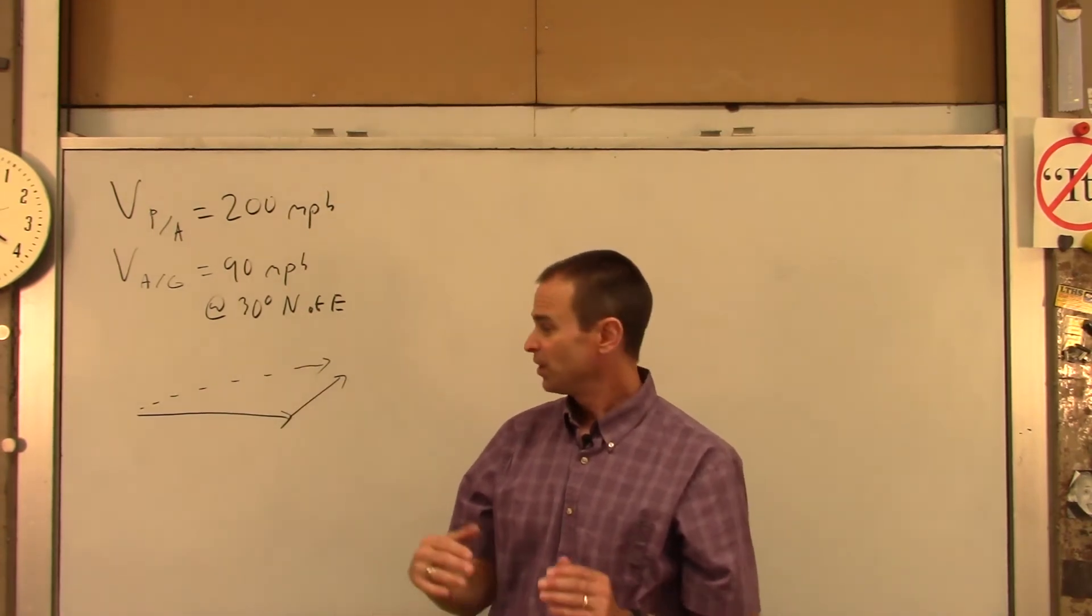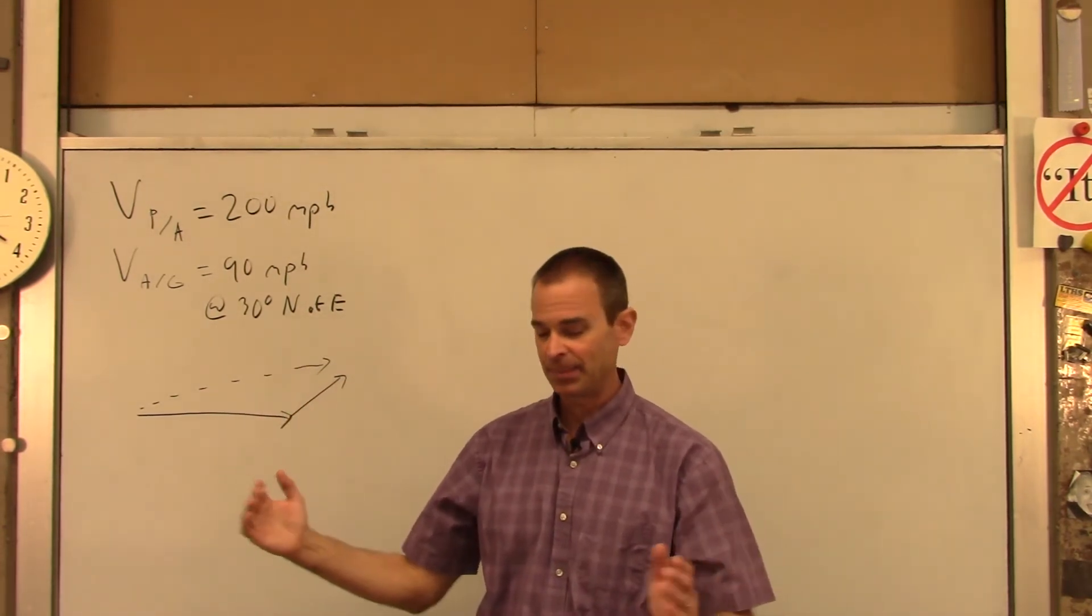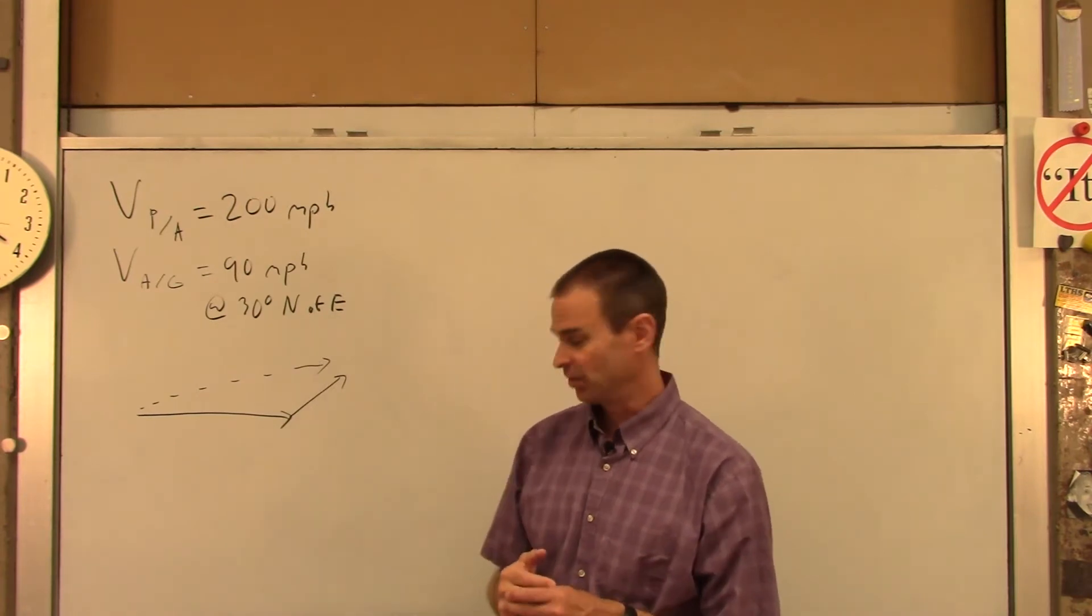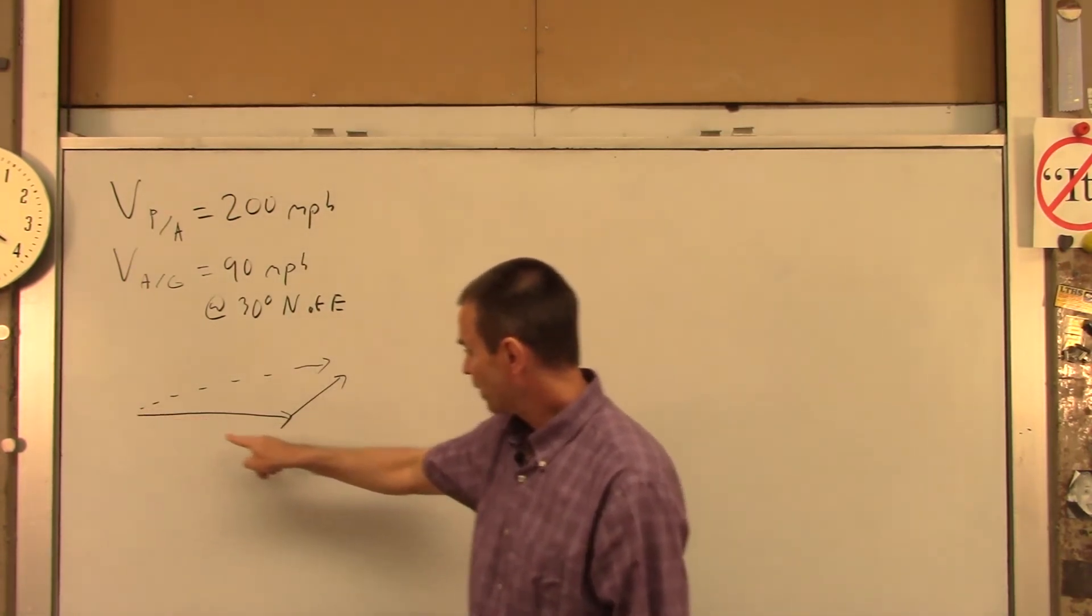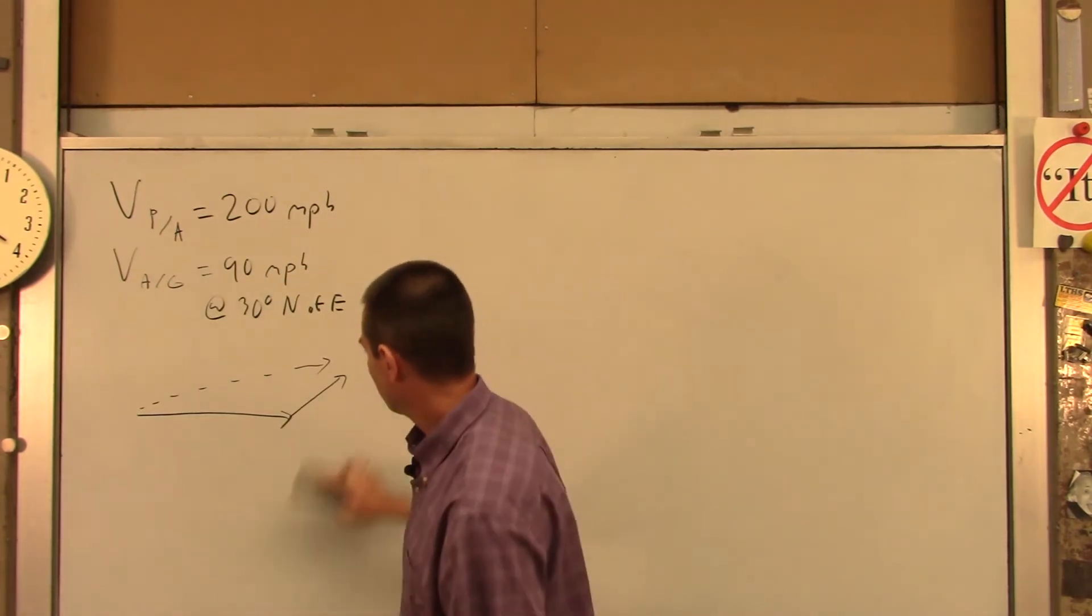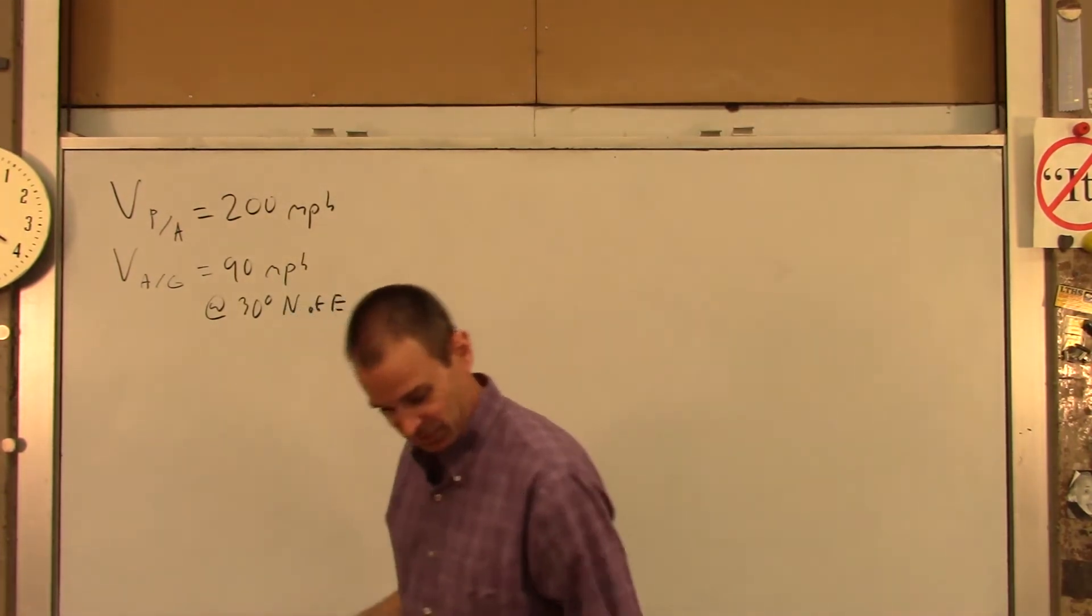And we're going to draw this picture big. So if you're taking notes on this, you want to draw a nice big vector diagram because we're going to write all over it with all kinds of numbers. So I'm going to draw this line moving a little bit southward or directed a little bit southward.